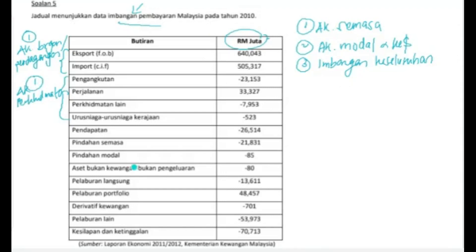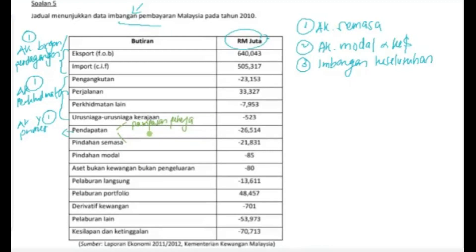Akaun perkhidmatan ini juga berada di bawah akaun semasa. Seterusnya kita ada pendapatan. Untuk maklumat pelajar, pendapatan ini sebenarnya merujuk kepada akaun pendapatan prima. Kita ada akaun pendapatan prima dan lagi satu akaun pendapatan sekunder. Akaun pendapatan prima terletak di bawah akaun semasa. Bagi akaun pendapatan prima, sebenarnya dia pecah kepada dua — iaitu pendapatan pekerja dan pendapatan pelaburan.